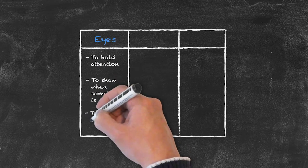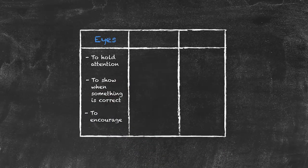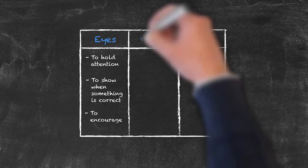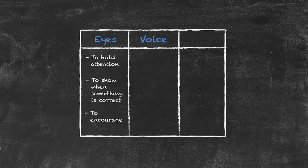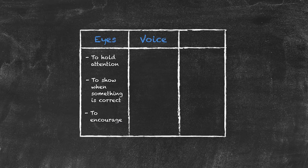And the eyes can also be used to give encouragement to students and indeed to dissuade. Moving on to the voice, the voice itself will change naturally depending upon what you're doing in the classroom, and we should be careful that when using our voice that we enunciate every single word very clearly.